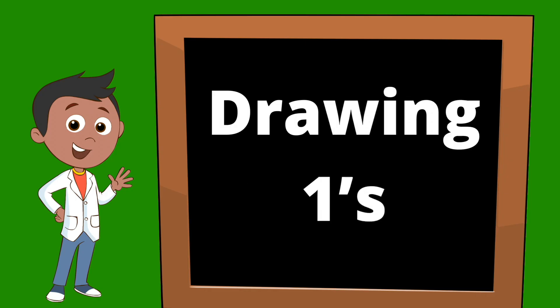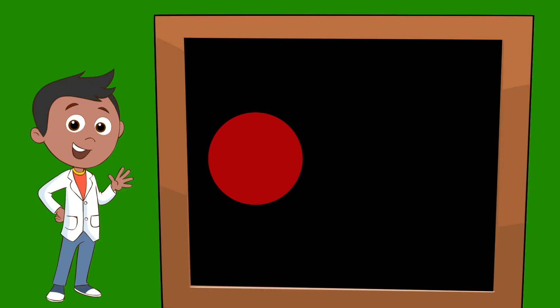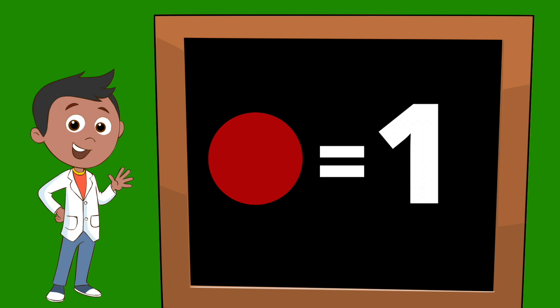Today we're going to be drawing ones. Typically in math you're going to see your ones drawn with a circle. Every time you see a circle it's important to remember that it stands for one. So this circle represents one circle.